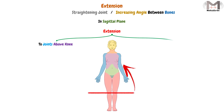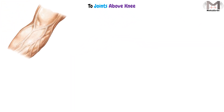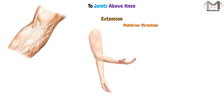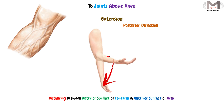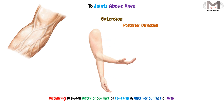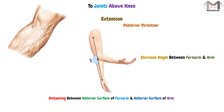In joints above the knee, like the elbow, extension occurs in the posterior direction or backward. When we extend the elbow, we distance the anterior surface of the forearm from the anterior surface of the arm — the forearm moves posteriorly — and the angle between the forearm and arm increases.